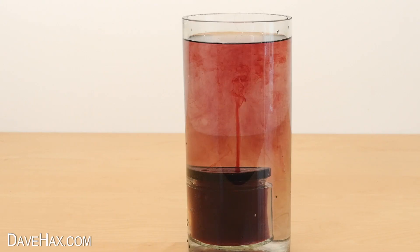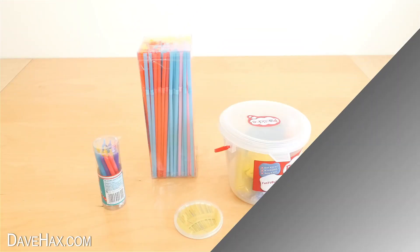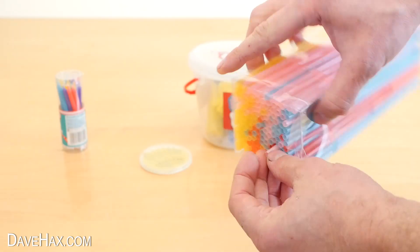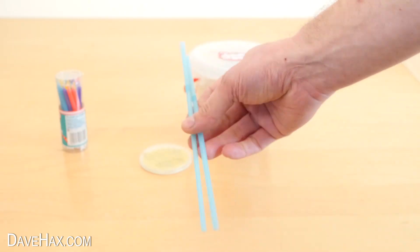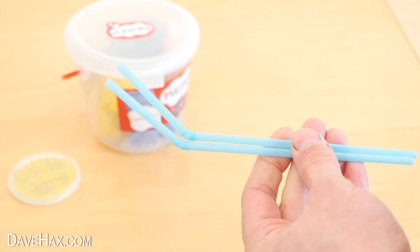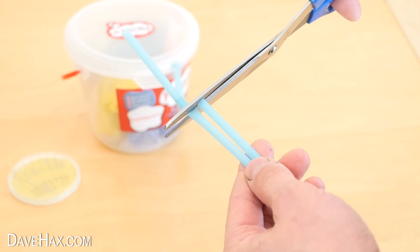This time it stayed working for a lot longer too. For the next one, I'm taking a couple of drinking straws. If they're bendable straws like this, I'm cutting them just below the bend.